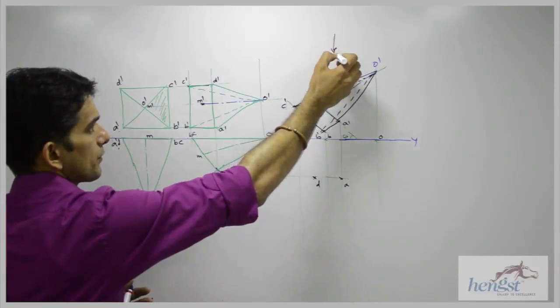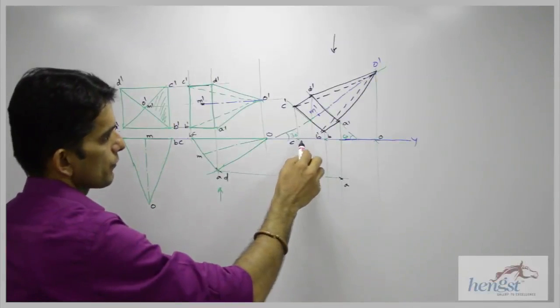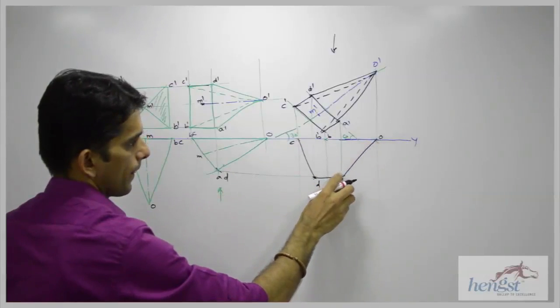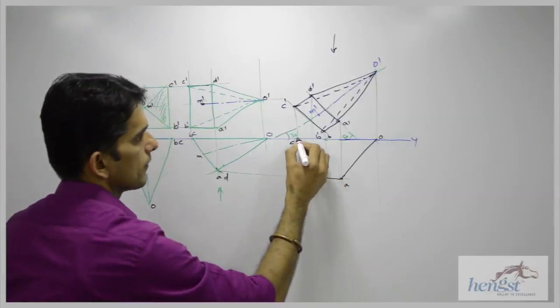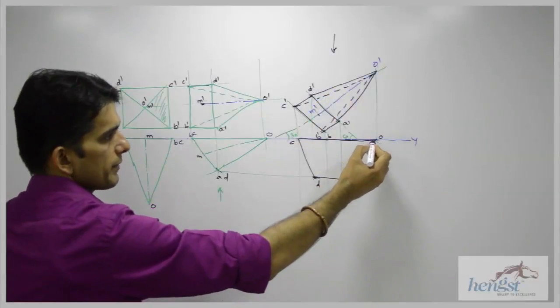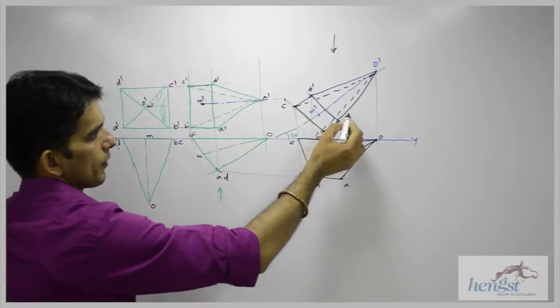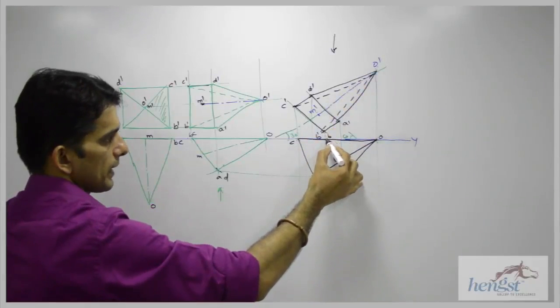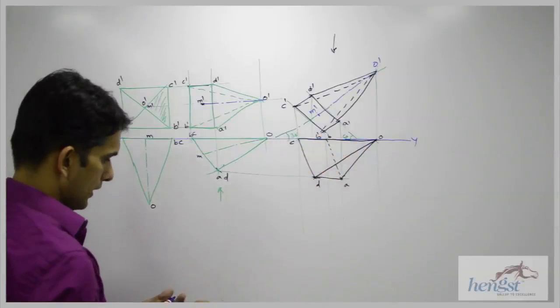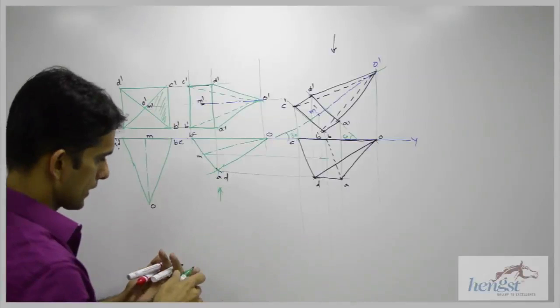Now see, observer will see from the top. Apex is nearer to the observer. So first we will draw boundary line. All the boundary line will be dark. Now we will think about O dash D dash is nearer to the observer. So O D will be dark. See, B dash is away from observer. O dash B dash, so whatever line passing through B will be dotted. So B to A will be dotted because it is away from the observer. And then we can project point M dash also. So that is our axis.